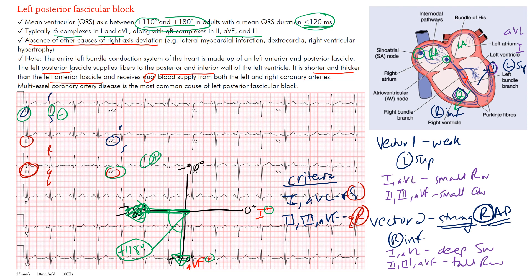Left posterior fascicular block is rare in isolation and often occurs in the setting of a right bundle branch block. You may also hear it called left posterior hemi-block — they mean the same thing, but more recently we use posterior fascicular block. The criteria: big S waves in the lateral leads, big R waves in the inferior leads, right axis deviation, and ruling out other causes of right axis deviation before making this diagnosis.